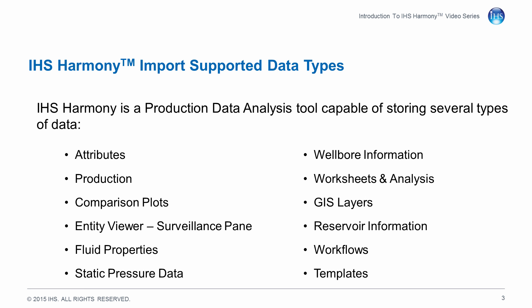IHS Harmony is capable of storing all of the data required for production data analysis, such as attribute data, which includes information such as well surface and bottom hole locations, the well operator and the producing formation, production data meaning fluid rates and pressures, and much more.